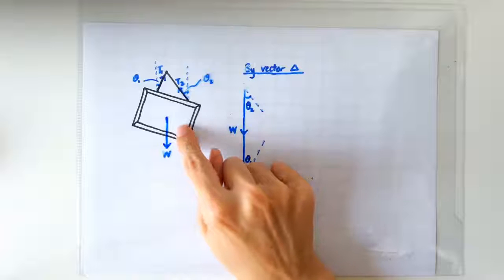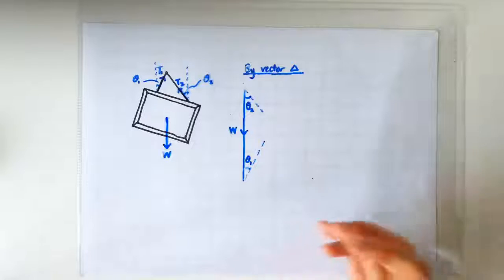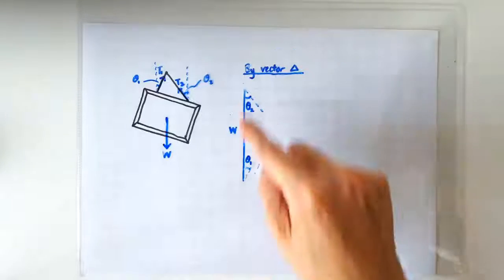Since the net force acting on the picture frame should be zero, these three forces should add up to zero and so they should form a closed triangle.